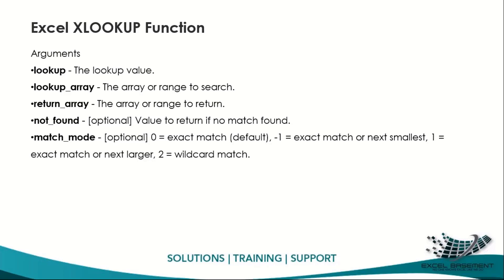Match mode is optional. If you skip it, the default is exact match (0). This is different from VLOOKUP, where skipping the last argument defaults to 1, which is approximate match. In XLOOKUP, the default match mode is exact match (0, i.e., false). You can also use -1 for exact match or next smallest, and 1 for exact match or next largest, which relates to approximate matching.